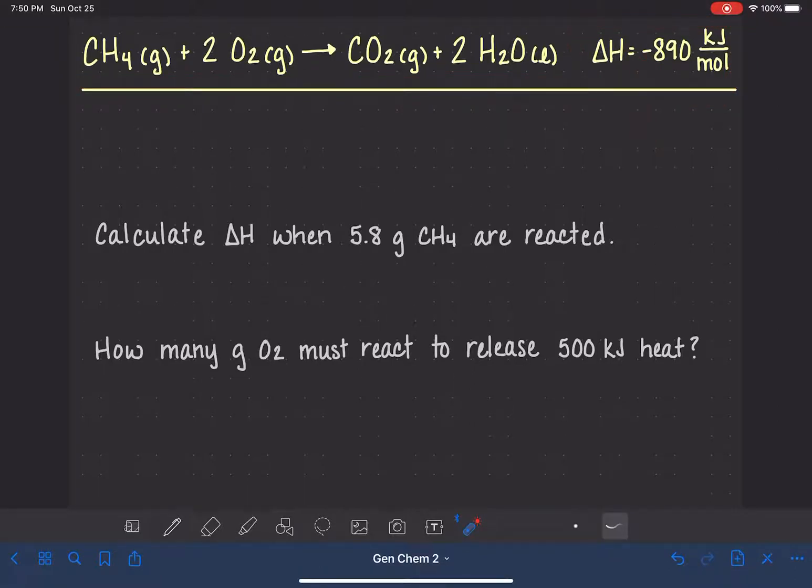This tells us that this reaction is exothermic or that it releases heat. Also notice the units on this value of delta H. It is being expressed in units of kilojoules per mole. These units, kilojoules per mole, allow us to express the heat that is being exchanged in terms of any reactant or any product in this balanced equation.